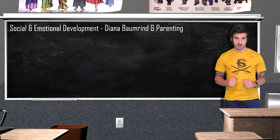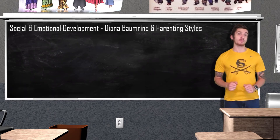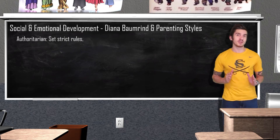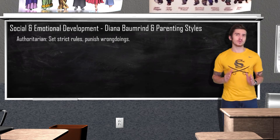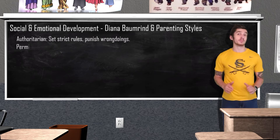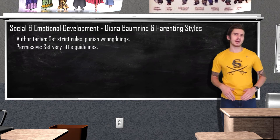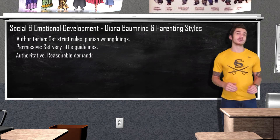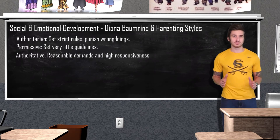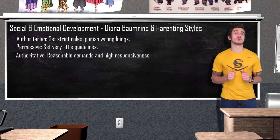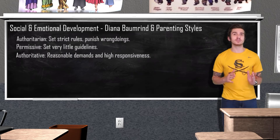Diana Baumrind studied how parenting styles affect children's emotional growth. Authoritarian parents have high demands but low responsiveness — very high expectations, little feedback or nurturance, and harsh punishment for mistakes. Permissive parents tend not to set firm guidelines, if any at all. The authoritative style, considered most effective by psychologists, is characterized by reasonable demands and high responsiveness. Authoritative parents can have high expectations but also give their children the resources and support they need to succeed.